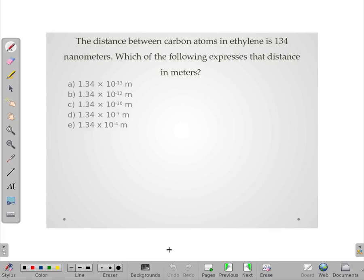The distance between carbon atoms in ethylene is 134 nanometers. Which of the following expresses that distance in actual meters?